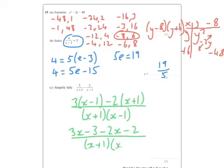You could multiply out those brackets at the bottom if you like, but I personally probably wouldn't. The denominator is not going to change, x plus 1, x minus 1, and then 3x minus 2x is x minus 5.